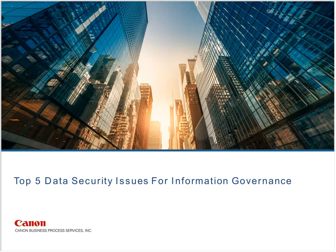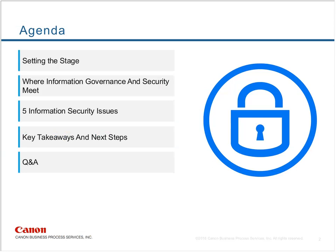Let's move on to our agenda. As part of our webcast series on information governance, today we'll be discussing the security issues that impact an effective governance program. First, we will set the stage with the security issues many of us are facing and the elements of a sound information governance framework. Then we will discuss the principles of information governance and security, and the five information security issues you should be aware of as you hone your information governance program. Lastly, we will cover the lessons learned and next steps, and we'll have a few minutes at the end for Q&A.